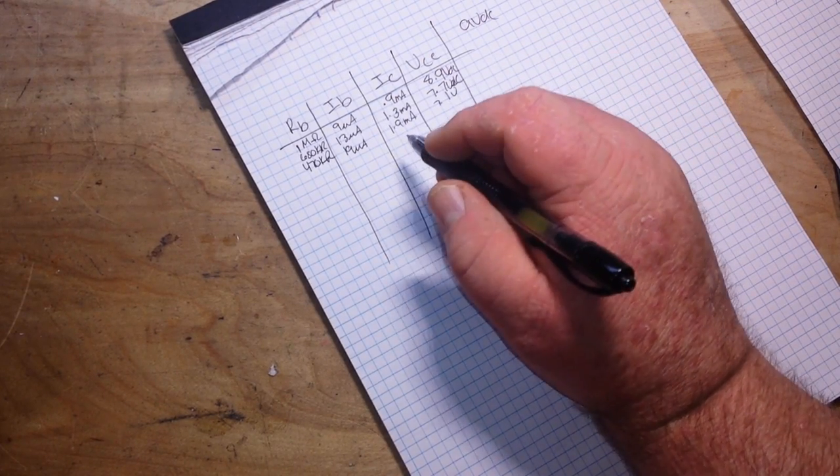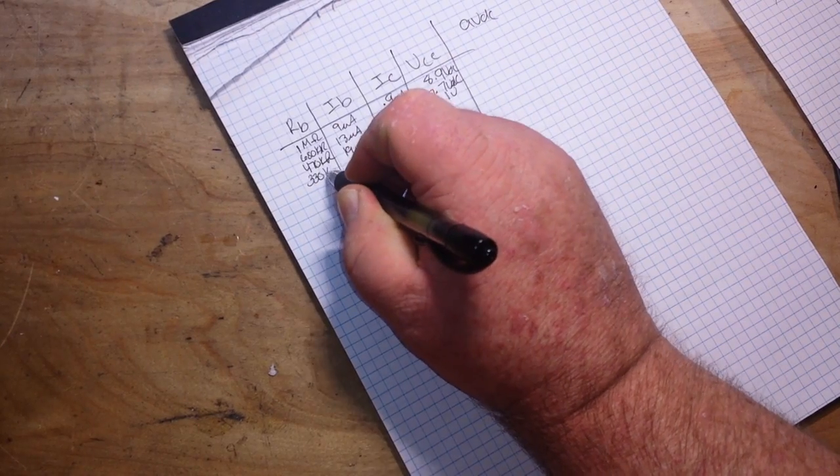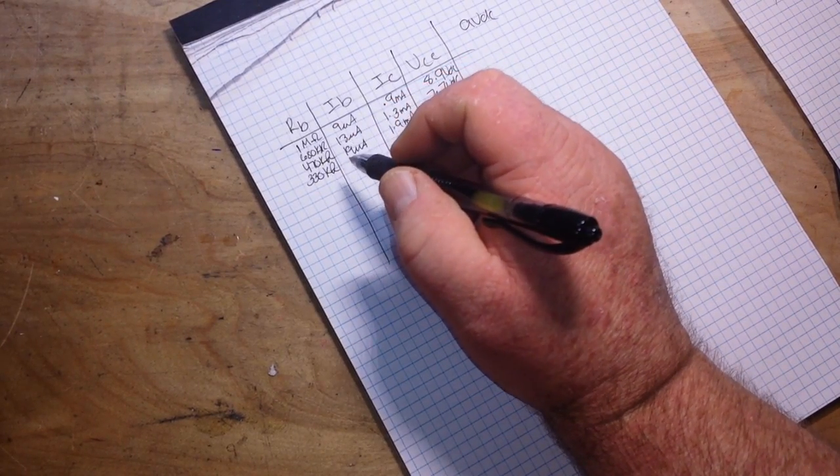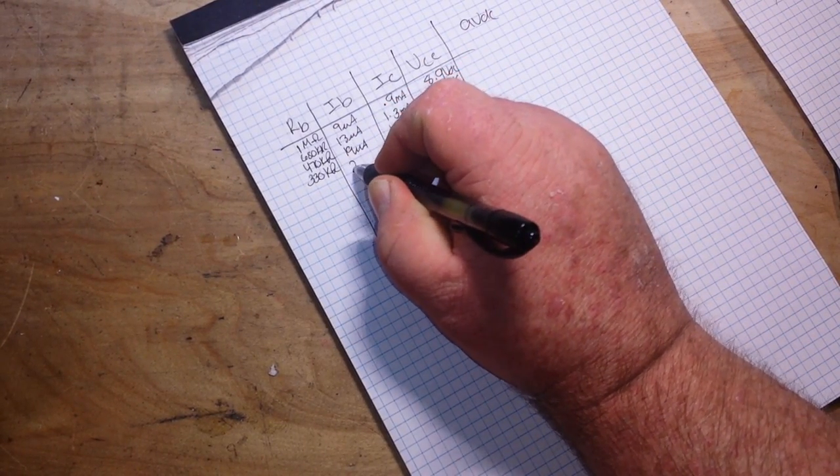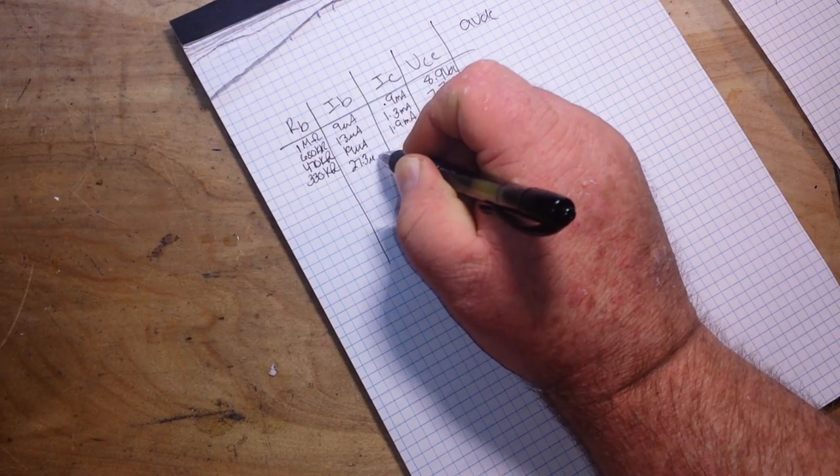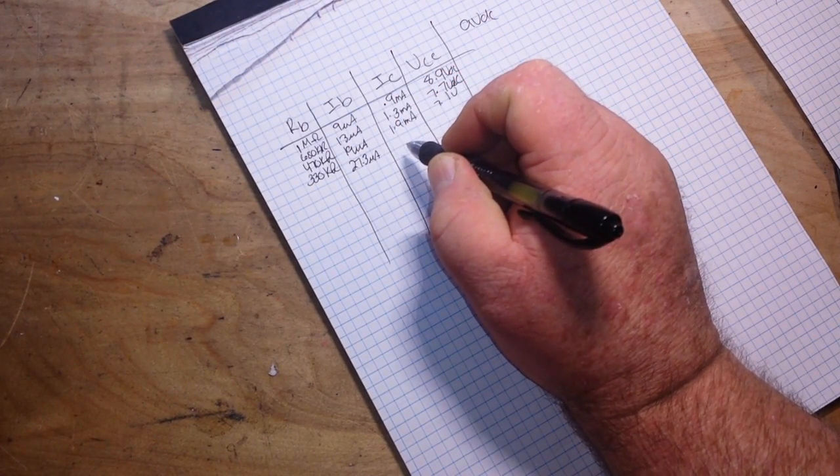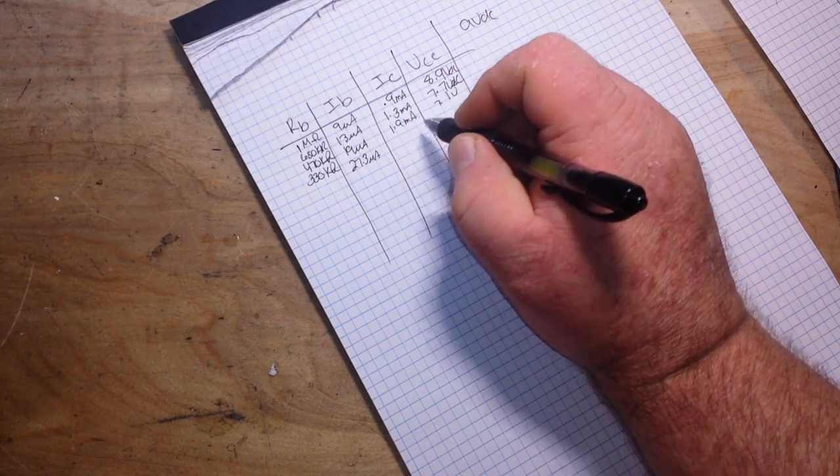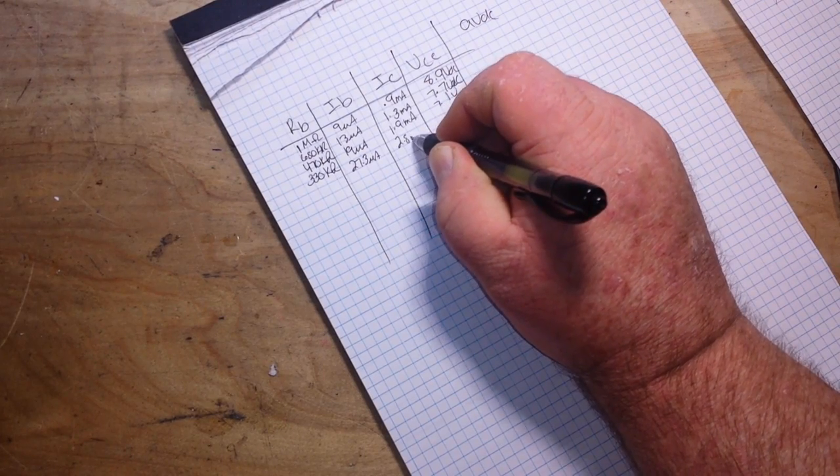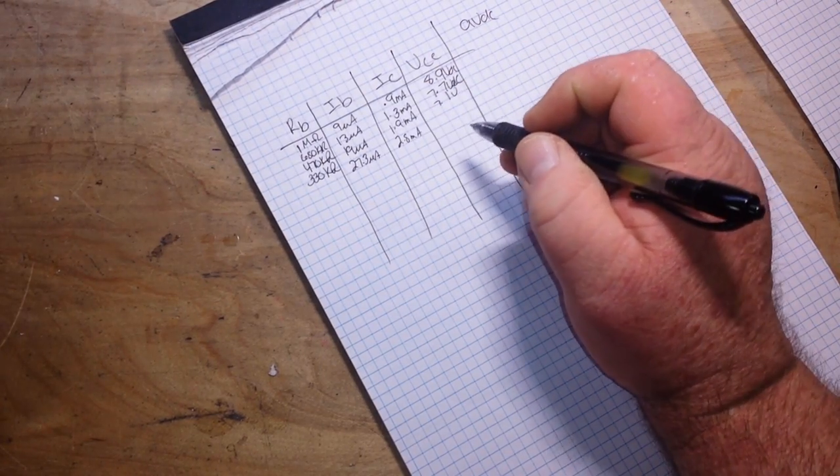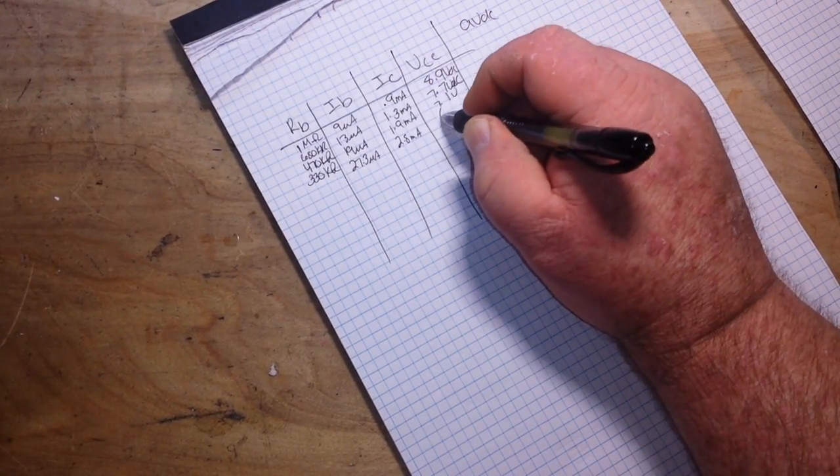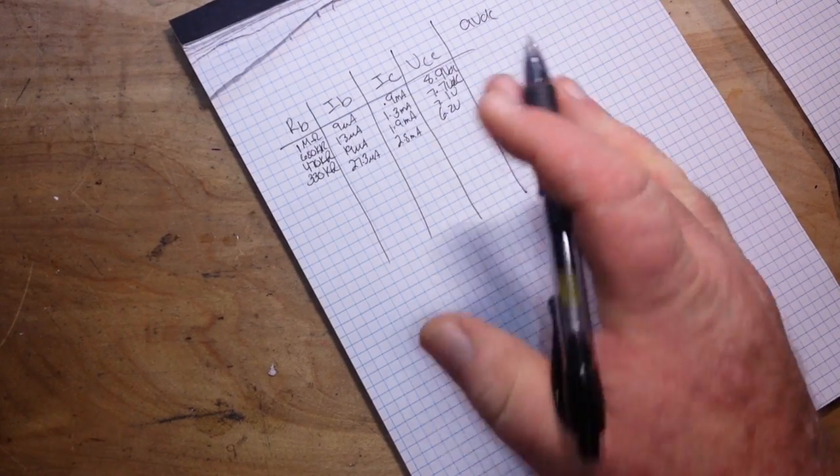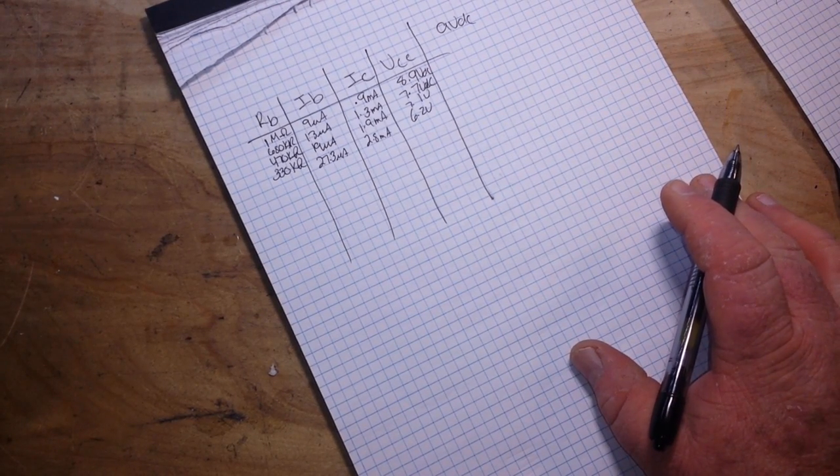Then I went down to 330 kiloohms, this is the last one I'm going to do. 330, which gave me 27.3 microamps of base current, 2.8 milliamp collector current, and 6.2 volts DC of our collector emitter voltage.